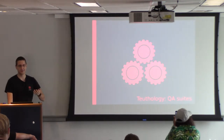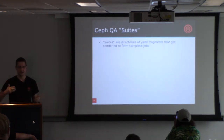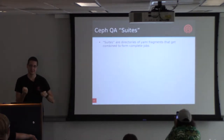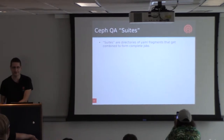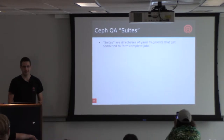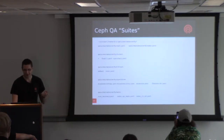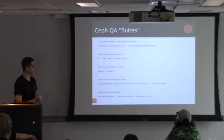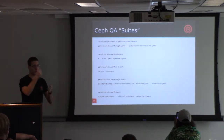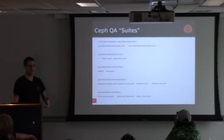Instead of scheduling individual jobs we tend to schedule suites. Suites test a specific category of the Ceph interface - we have suites for the filesystem, the underlying RADOS object store, the S3-compatible gateway, and more. Rather than being a full listing of all tests we want to run, suites are actually directories of YAML fragments that get combined. This is useful because when we want to add a new test for a new API we've built, we just add a new YAML fragment and the system picks it up against all the other combinations.